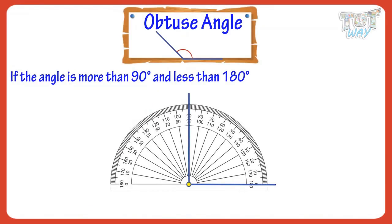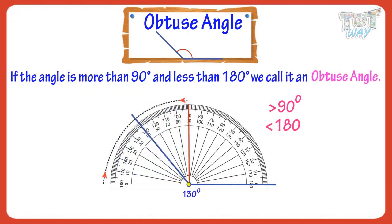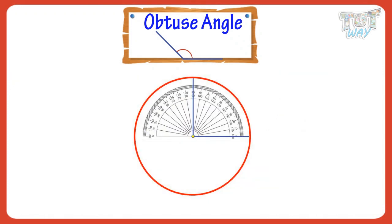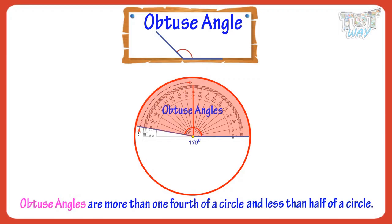If the angle is more than 90 degrees but less than 180 degrees, we will call it an obtuse angle. So obtuse angles are more than one-fourth of a circle and less than half of a circle.